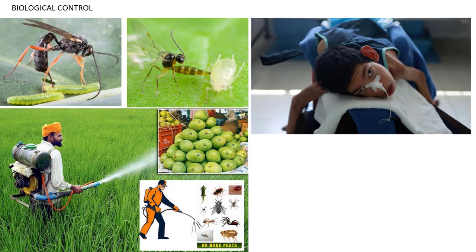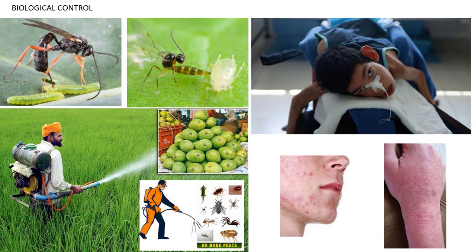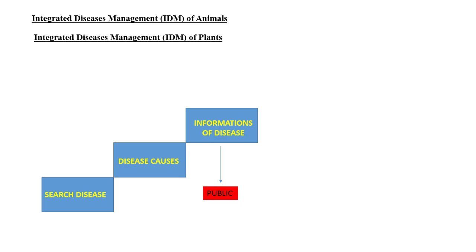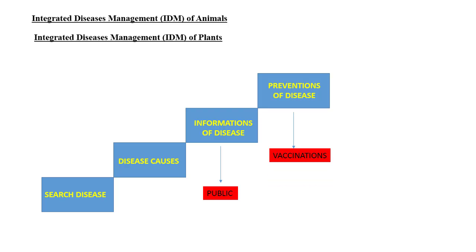Integrated disease management of plants and animals involves different steps. First, we should search for the causes of diseases and gather all information about them. The public should also know all the information and preventive measures - either by vaccination or medicine, like the polio vaccine. If someone is infected, they should be isolated. During COVID, the best treatment was isolation.